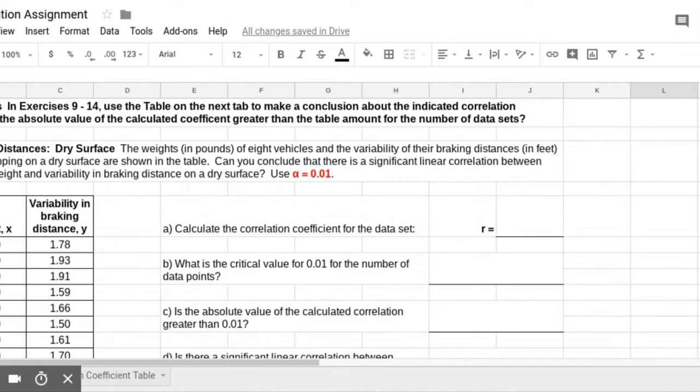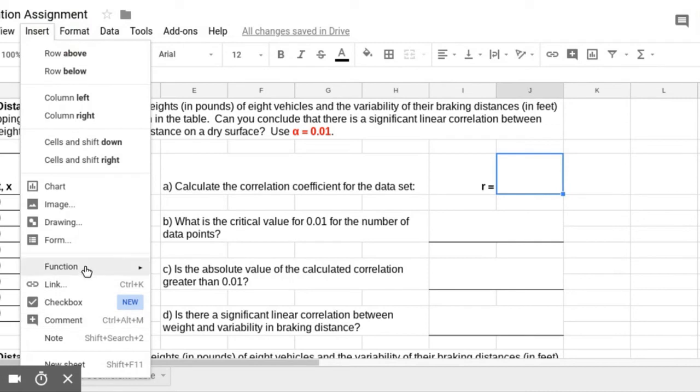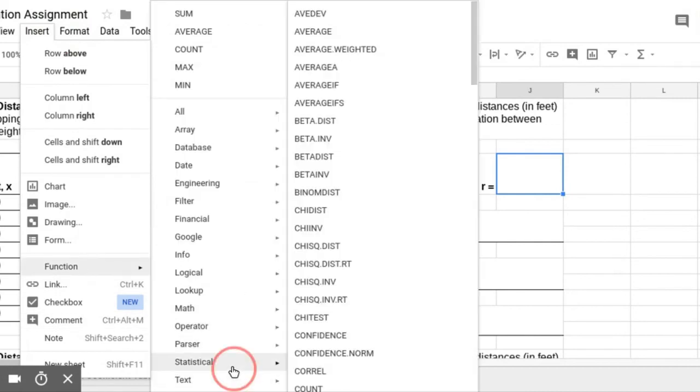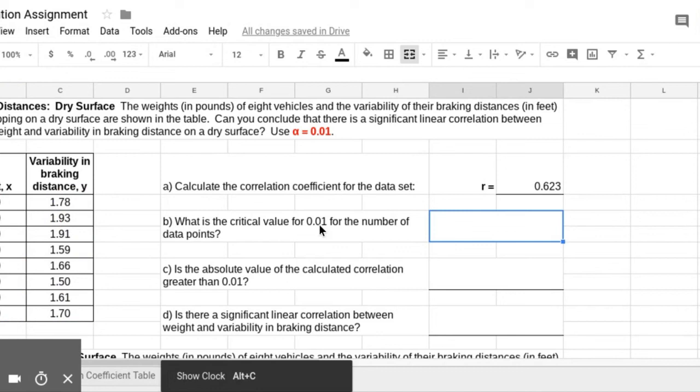So again, the chart - remember to always highlight everything including the titles when you're highlighting. To figure out the correlation, only highlight the number parts of the columns. Problem 9, we're going to calculate the correlation coefficient. Same setup - you're going to click on it, go to Insert Function, Statistical, CORREL, and then highlight your first column for your x's, comma, highlight your second column for your y's, and then Enter.